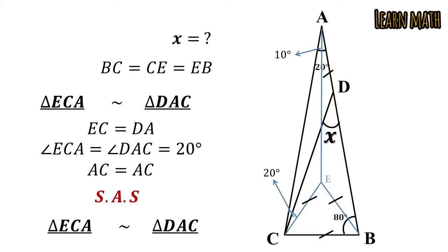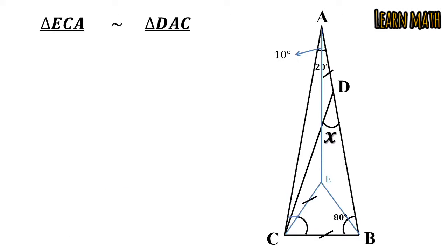Now if these triangles are similar, we can easily find angle X. But first look at this angle, angle CAE. This angle is 10 degrees. So the triangles are similar. Here we can say angle ACD is also equal to 10 degrees.